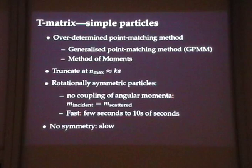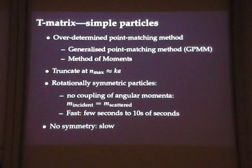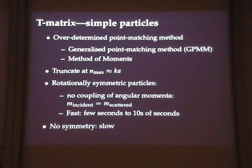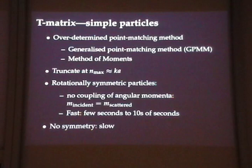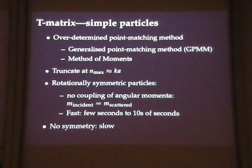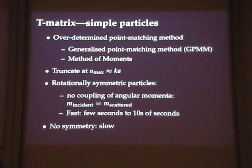Where we truncate the series depends on the size parameter of the particle — the wave number times the radius of a sphere enclosing the particle. This gives a very large linear system for large particles and can be quite slow to solve. We're saved significantly if the particle is rotationally symmetric: our vector spherical wave functions carry angular momentum, and a rotationally symmetric particle does not couple angular momentum, so the m-index — the z-component of angular momentum per photon — doesn't change. Only a very small number of modes are involved, making it very fast: seconds for small particles, maybe tens of seconds for large ones. Without such symmetry it might take a few hours.